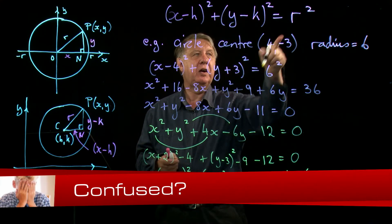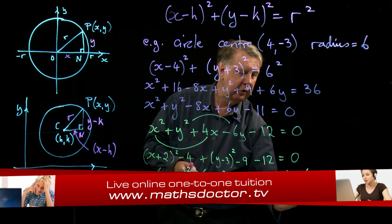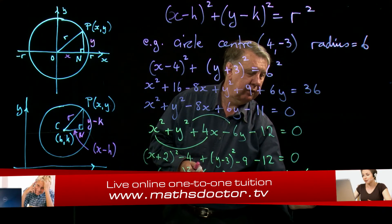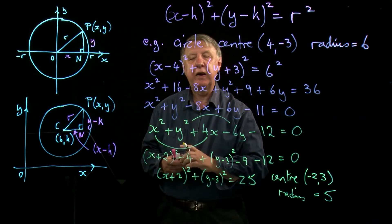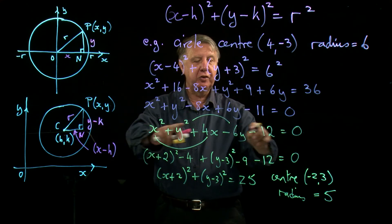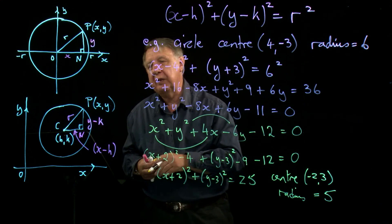Looking up, compare the two then. H is negative 2, K is 3, so the center is negative 2, 3. And 25 is the radius squared, so the radius is 5. So there, from this version we've done the reverse process and we've got the center and the radius.